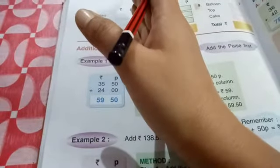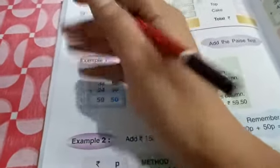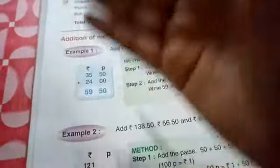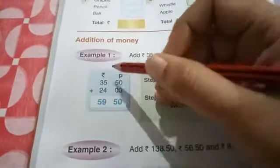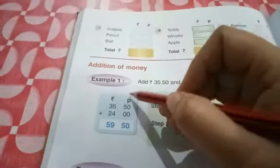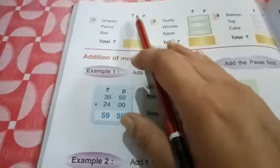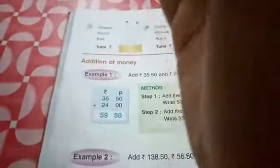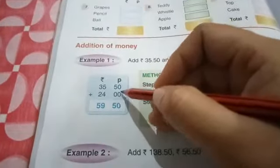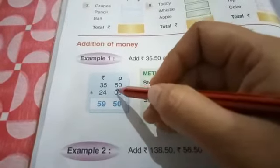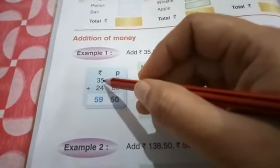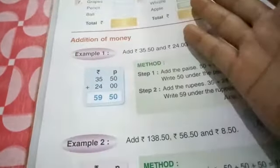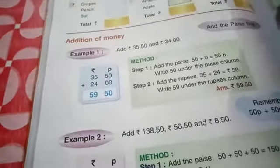This you all know as I told you in class 1 also, and you people are very smart. So rupee and paise, we have seen that rupee and paise we are writing in different columns. First we will start with the paise column. 0 plus 0 is 0, 5 plus 0 is 5. Now come to the rupee column: 5 plus 4 is 9, 3 plus 2 is 5. So easy, this only you have to do.